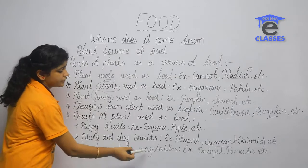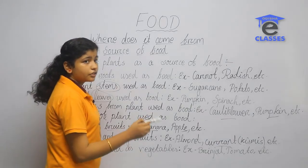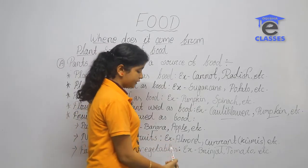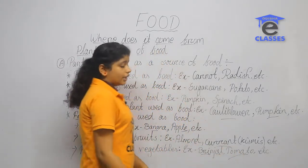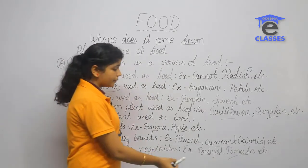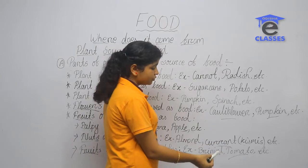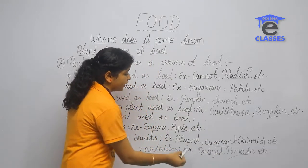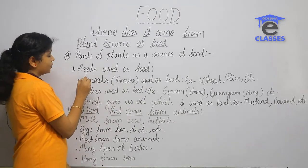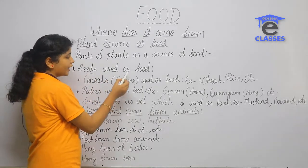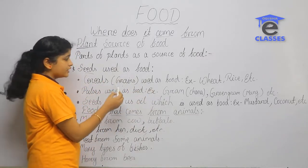Vegetables are used as food. Examples include garlic, tomatoes, green fruits used as vegetables, onions, and peanuts.